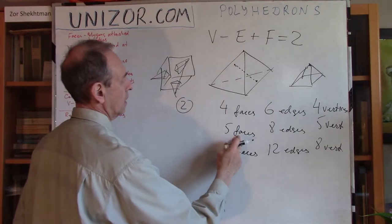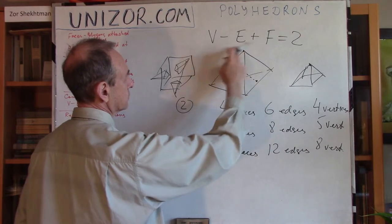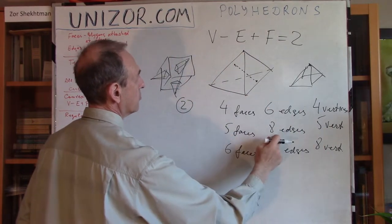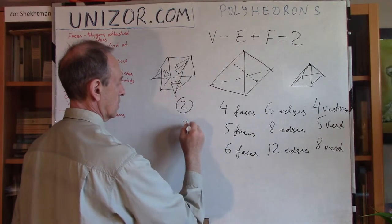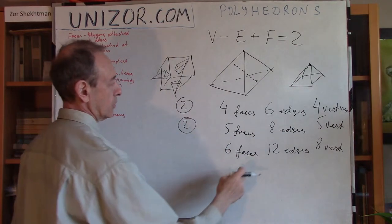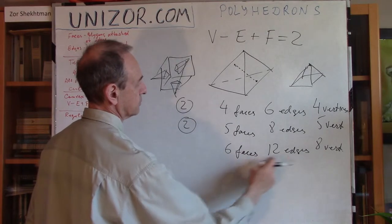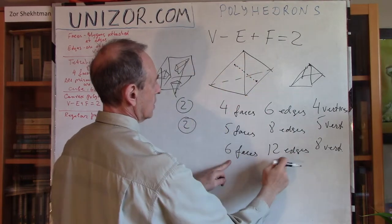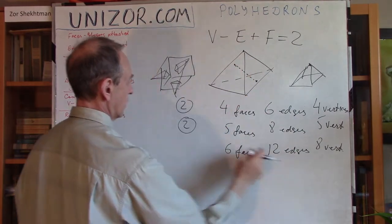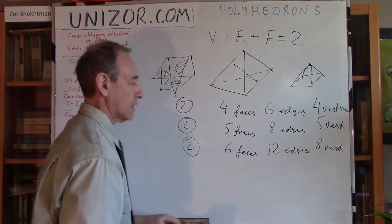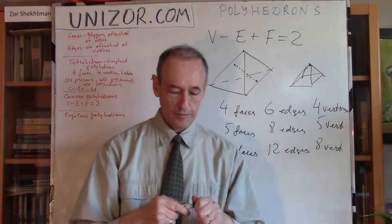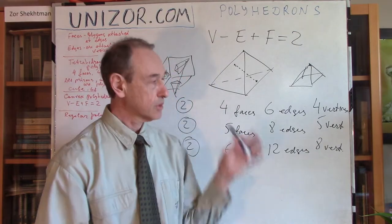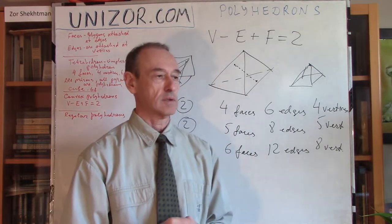Now, here, you have 8 vertices and 6 faces. That's 14 minus edges minus 12, 2. You see how interesting? Well, the proof of that actually belongs to Euler.